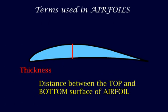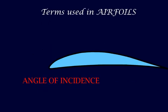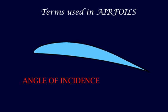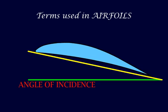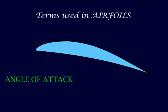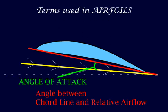Thickness is the distance between the top and the bottom surface of the airfoil. Angle of incidence is the angle between the chord line and the horizontal axis. Angle of attack is the angle between the chord line and the direction of the airfoil.